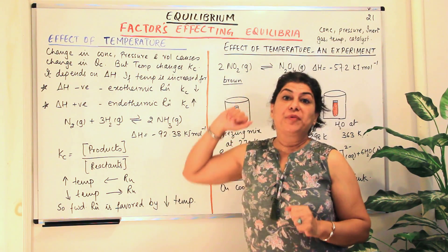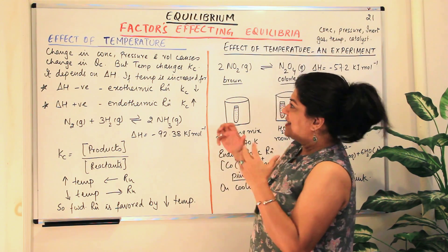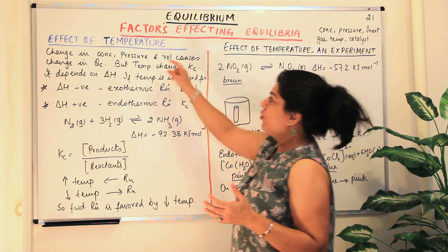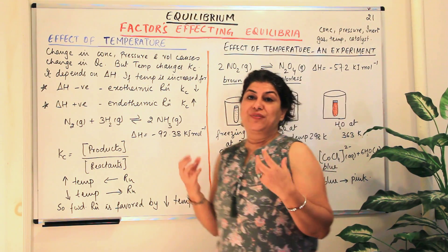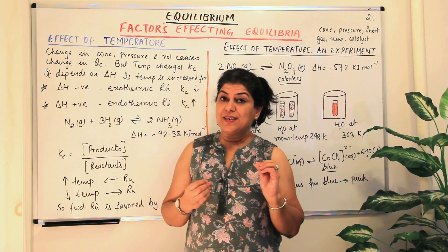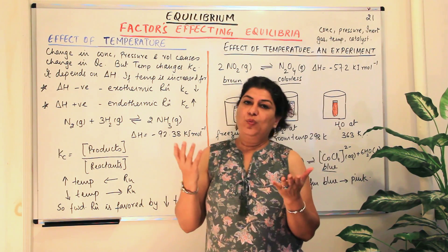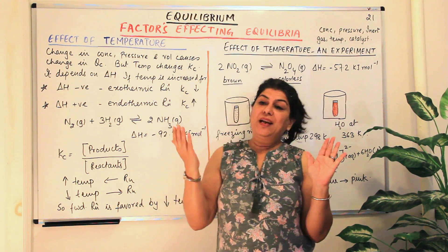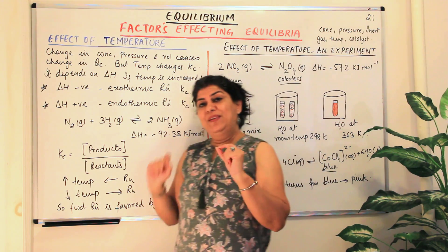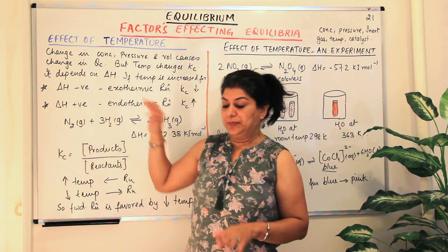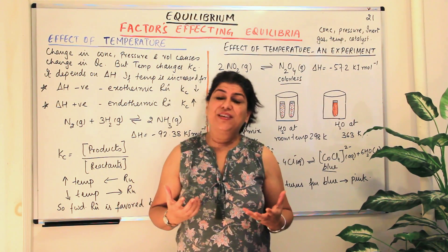So what is the effect of temperature on equilibrium? When we discuss the change in concentration or pressure — and in order to change the pressure we change the volume — whenever we change these, it was Qc that was affected. Comparing the values of Kc and Qc: if Qc was less than Kc, the reaction proceeds in the forward direction; if Qc was greater than Kc, the reaction proceeds in the backward direction. But when we cause a change in temperature, instead of Qc it is the equilibrium constant Kc itself that is affected.